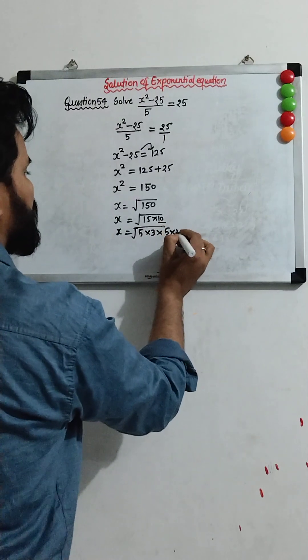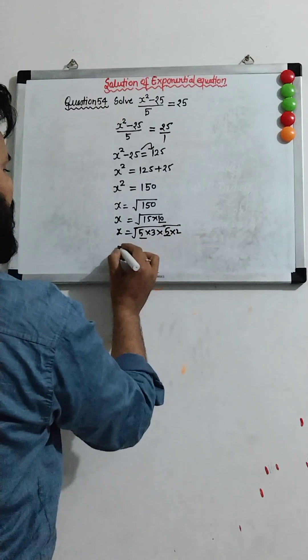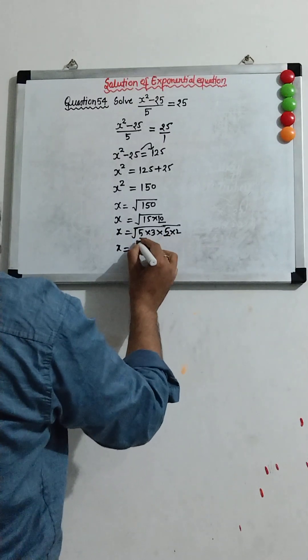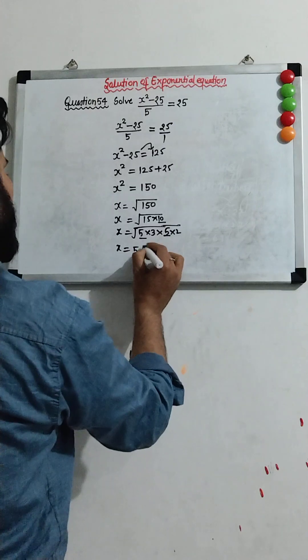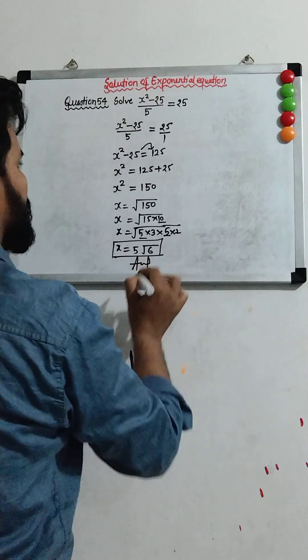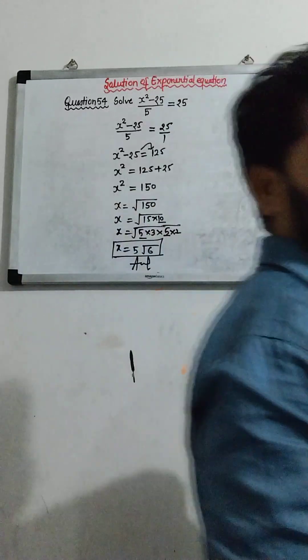And 10 means 5 × 2. So we have 5², so 5 comes out. The answer will be 5√6, and this is the solution of the given exponential equation.